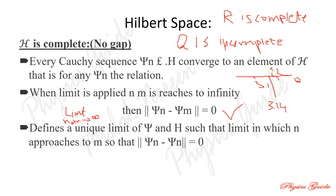There exists a unique limit psi in H such that as n approaches m, ‖psi_n − psi_n‖ = 0. All these properties, if satisfied, mean we can say that this is a Hilbert space.